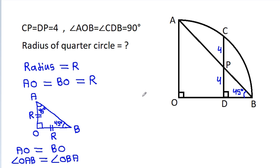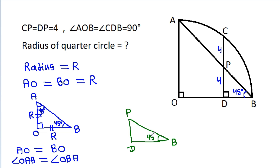This angle is 45 degrees. Now in triangle PDB, this angle is 45 degrees and this angle CDB is 90 degrees. So the remaining angle DPB will also be 45 degrees. Therefore angle DPB is equal to angle DBP.